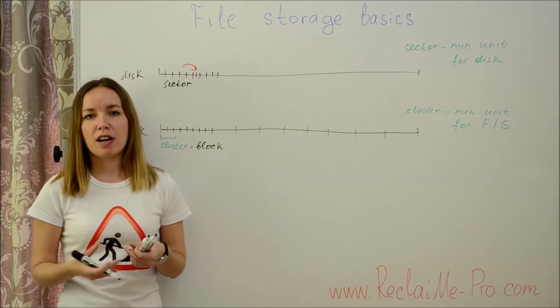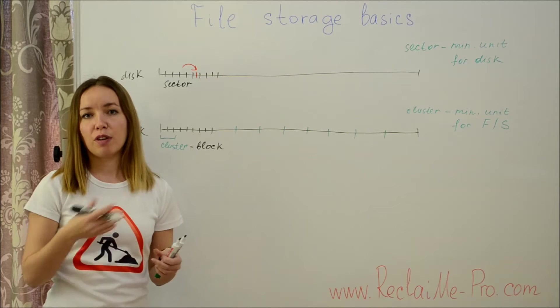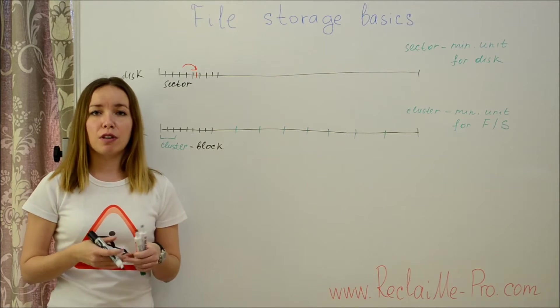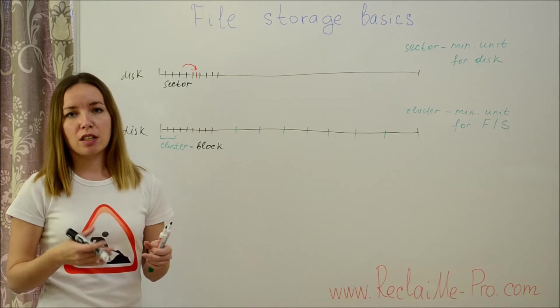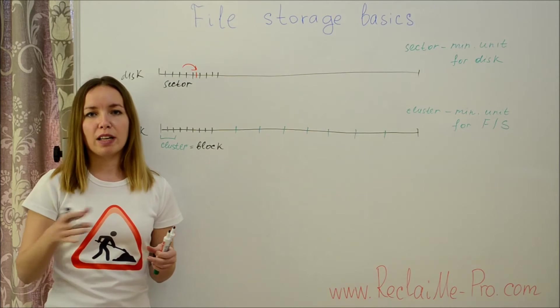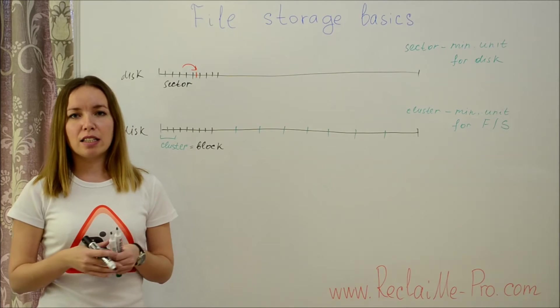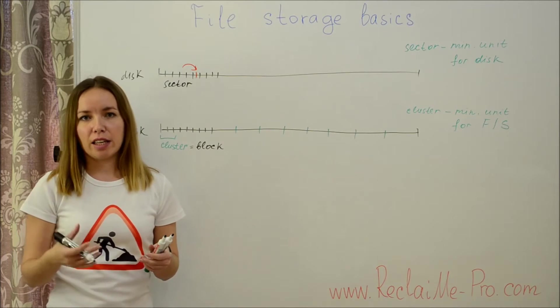A file system, if possible, tries to allocate clusters sequentially. But if this is impossible because the next cluster has already been used by another file, a non-contiguous cluster is allocated.